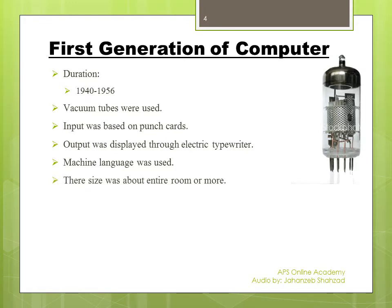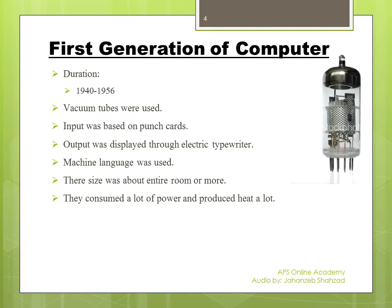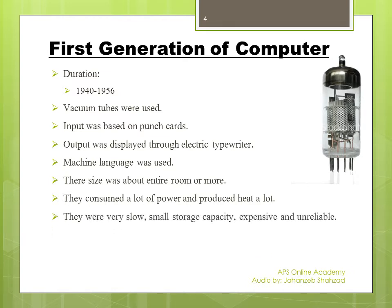First generation computers were so big — their size was about an entire room or maybe more. They consumed a lot of power because their size was so big, and they produced a lot of heat. They were very slow and had very small storage capacity, meaning storing a large amount of data was not possible. They were also very costly — not everyone was able to buy or use them.